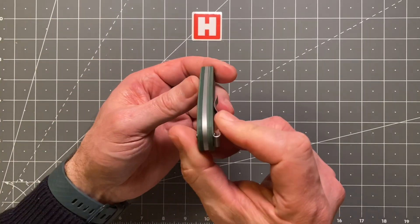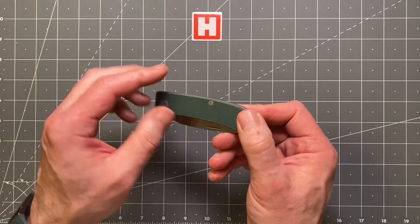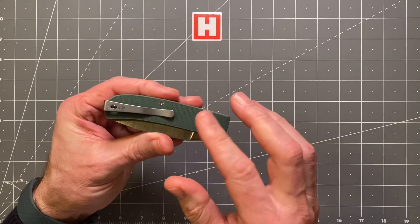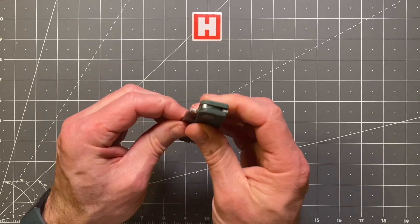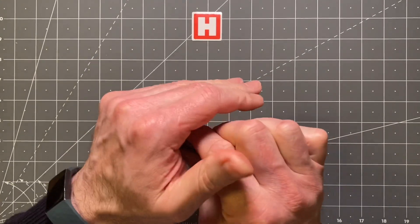The scales, they're G10, obviously in green finish which I like. G10, very grippy, feels very comfortable in the hand and everything like that, very nice.